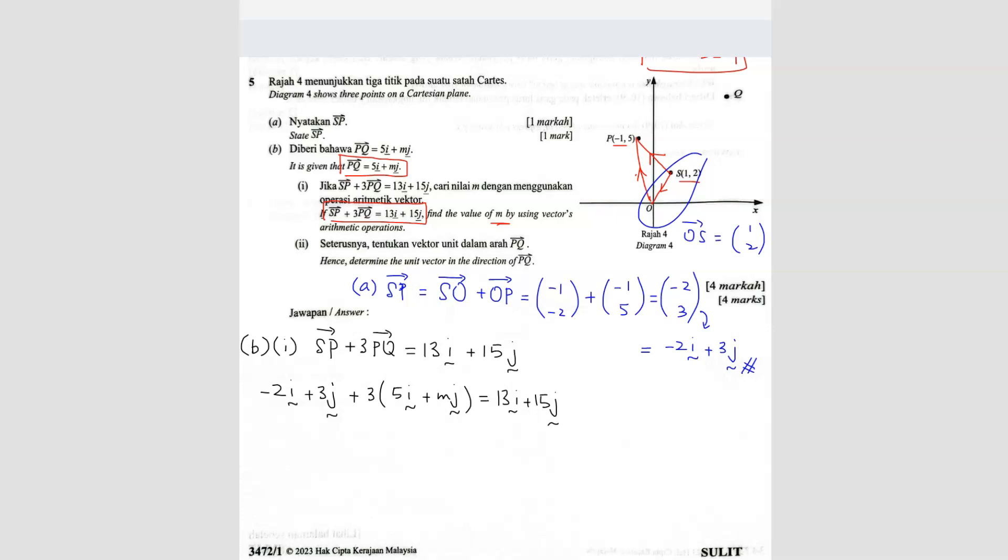So we can combine the I together and also the J together. We put them together. So for I, you will have negative 2 plus 5 times 3 is 15. So plus 15I. So negative 2 plus 15 will give you 13.